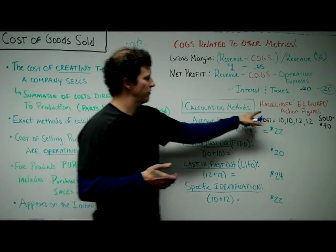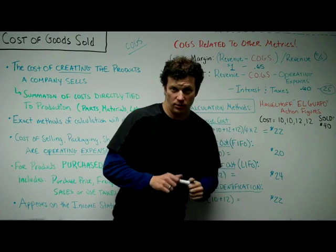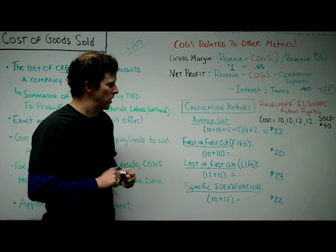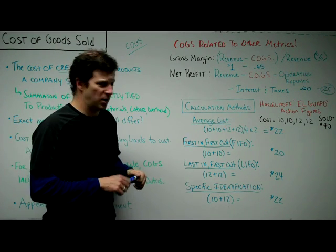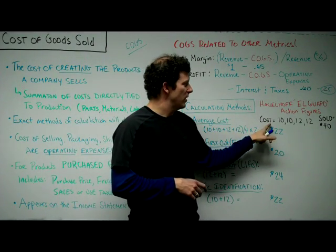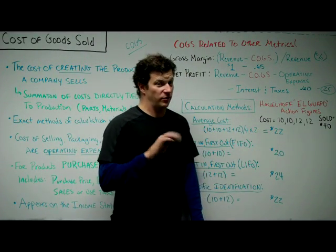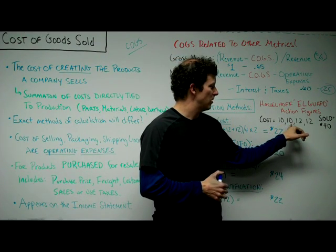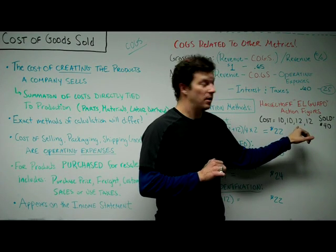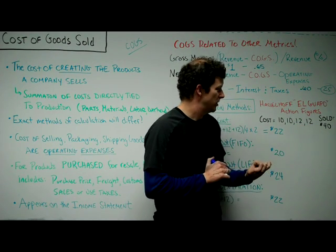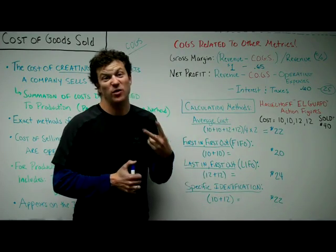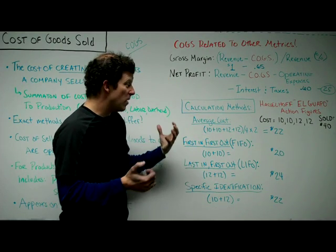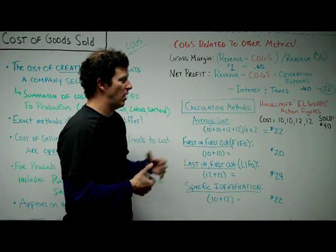For this example, let's use Hasselhoff's El Guapo action figures — we're making action figures of Hasselhoff for sale in the Latino market. Let's say you're going to sell four of these action figures. Your company produces the first two for $10 each, then price on plastic goes up, so it produces the second two for $12 each. The company then sells two of them and gets $40 in revenue.